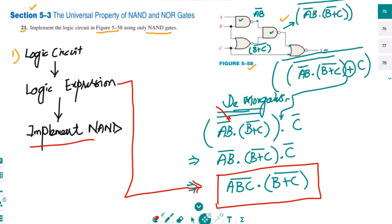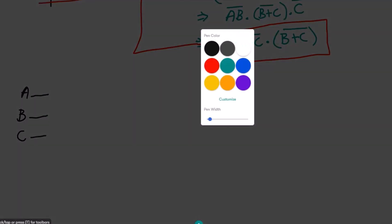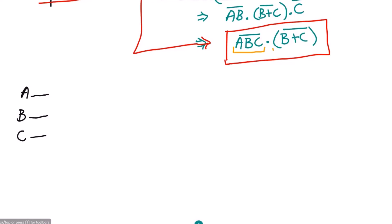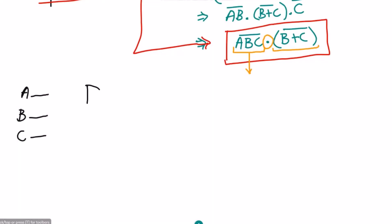Let me identify how many inputs we have: A, B, C — three inputs. As we have to use NAND gates, we implement the terms one by one and then multiply them together. First, we use a three-input NAND gate with inputs A, B, and C. At its output we get ABC whole complement.